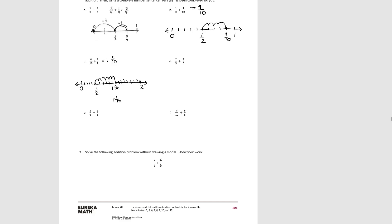For D, 2 thirds is greater than a half, and 3 sixths is equal to a half, so we'll have a sum greater than 1 — we extend the number line to 2. We divide into thirds and start at 2 thirds, then decompose into sixths to move forward 3 sixths, ending up at 1 and 1 sixth. So 2 thirds plus 3 sixths equals 1 and 1 sixth.